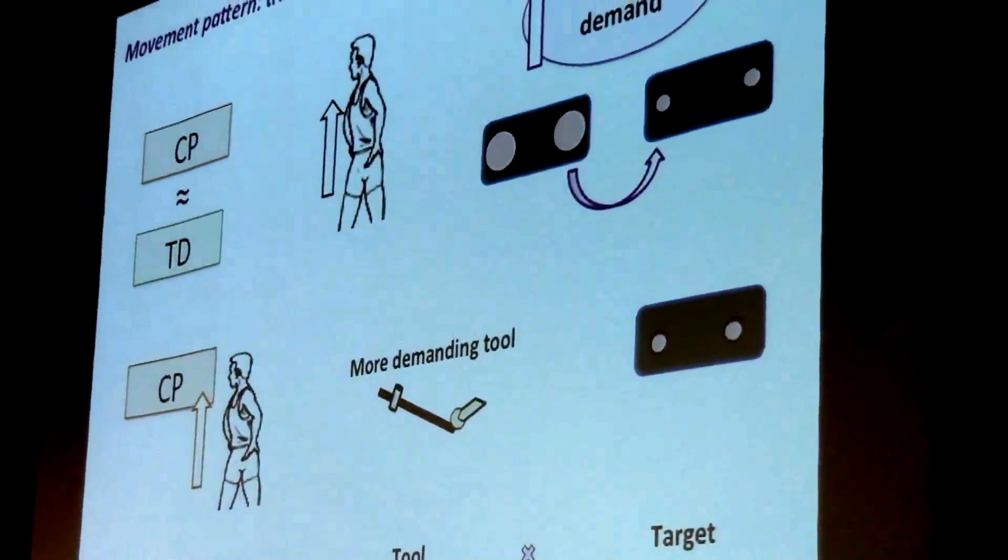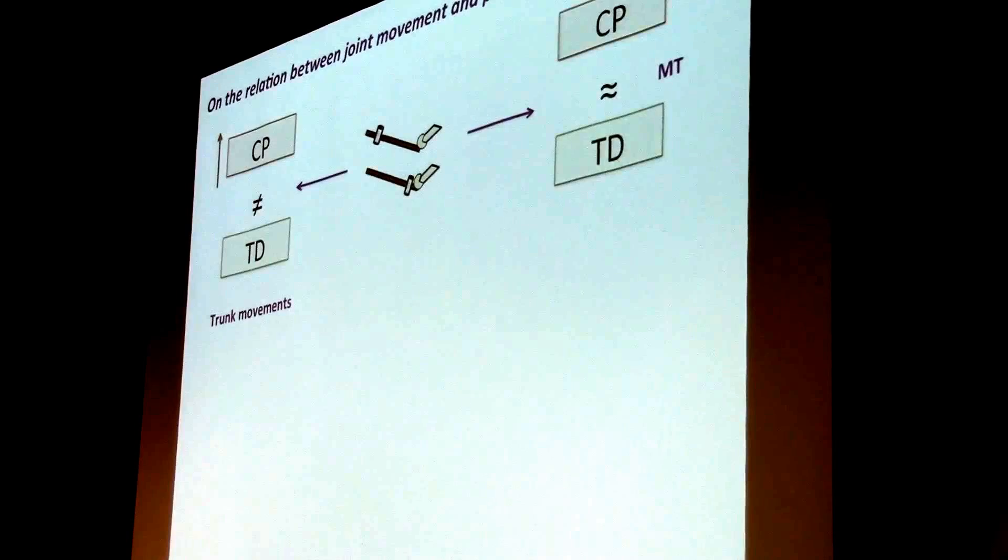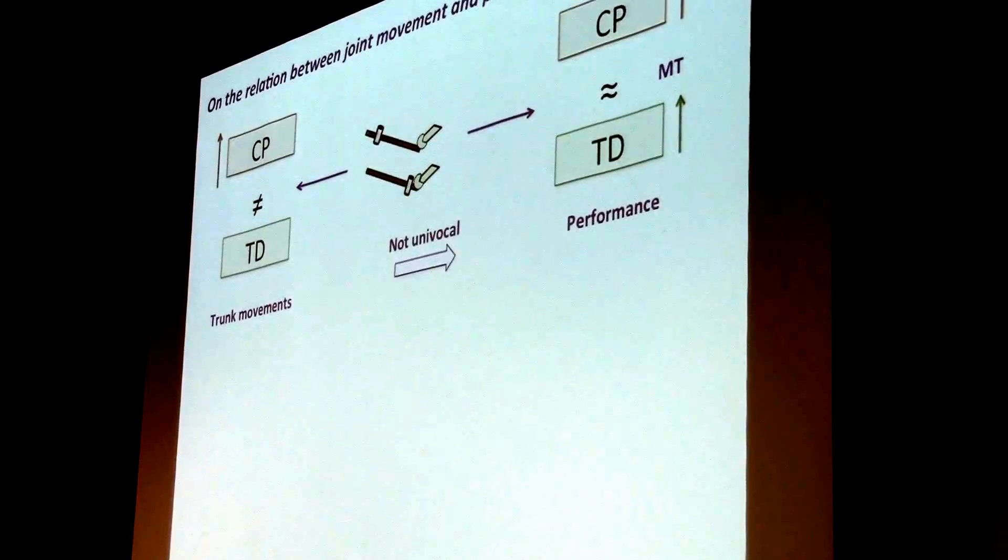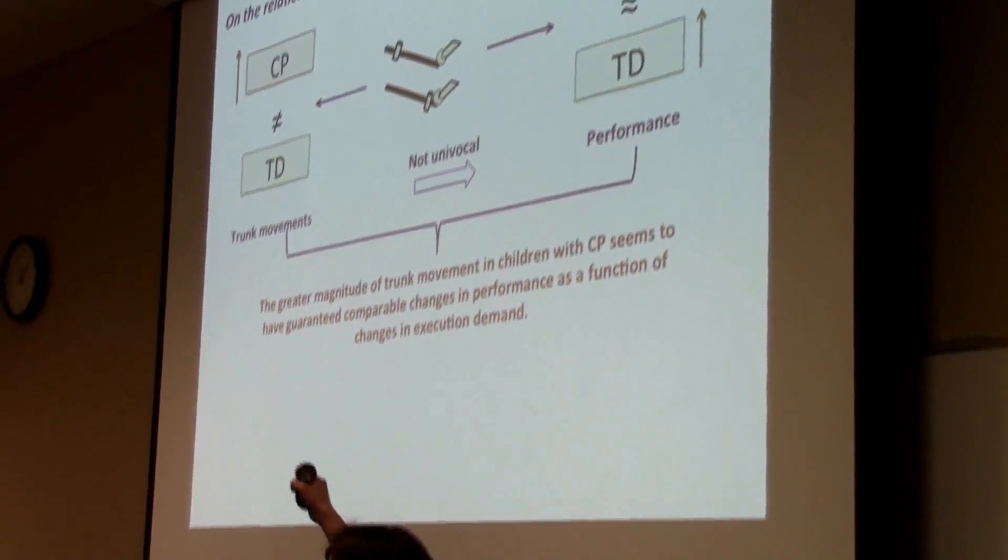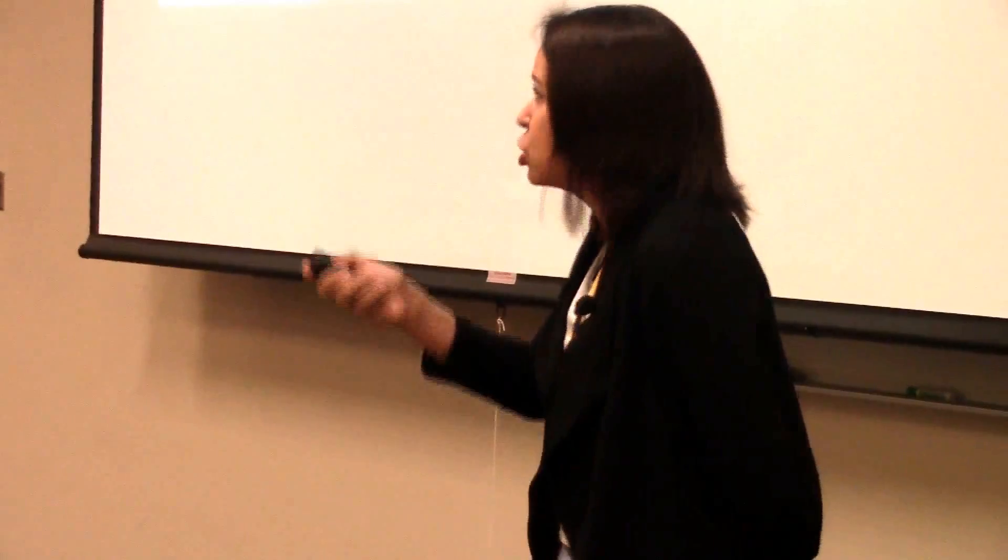So we had a group tool target interaction. We had greater increases in trunk motion in children with CP when they were obligated to use the more demanding tool, but we did not find that this resulted in greater increases in movement time for these children. Movement time increased in the same fashion for both groups. So we have differences in motion and basically equal effects in performance. So again, the relation between movements and performance is not univocal. In fact, the greater magnitude of trunk movement in children with CP seems to have guaranteed comparable changes in performance as a function of the changes in the tool. So actually trying to normalize these trunk movements, make it look like typically developing children, might be not so good. You may affect performance negatively.